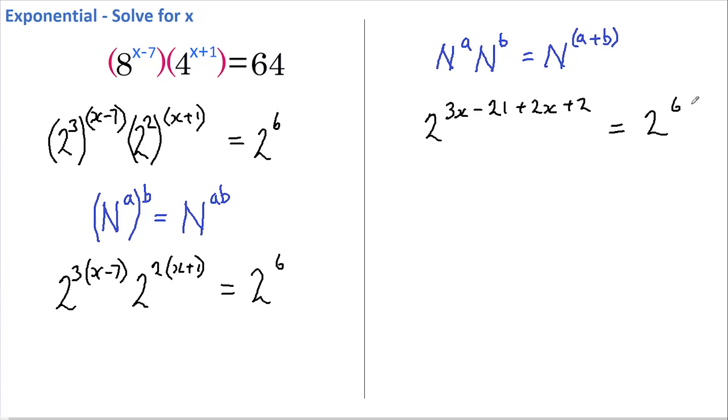Now, if the bases are the same, we know that the powers must be the same. Therefore, if I write down just the powers and group them together, we get 5x minus 19 equals 6. And rearranging, we get 5x equals 6 plus 19, which is 25.